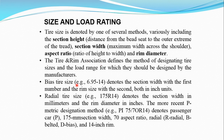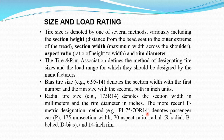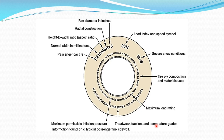For a bias tire, if it reads 6.95-40, both values are in inches — the first representing section width, the second the rim size. For a radial tire, the R term is included: 175 represents section width and 14 represents rim diameter. Alternatively, for a passenger vehicle: 75 is width, 70 is aspect ratio, R for radial, and 14 is the rim diameter in inches. This is how tire size specifications are represented.